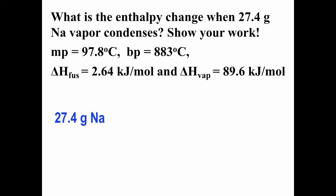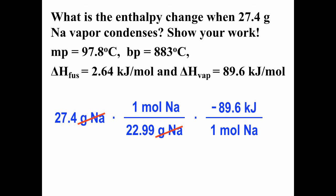It's pretty much the same as the one before. 27.4 grams of Na convert to moles. Then one mole of sodium gives off 89.6 kilojoules of energy or heat when this process takes place. So we put a negative sign on that to indicate that energy is given off. When we do this calculation, we get negative 107 kilojoules. So 107 kilojoules of energy is given off when 27.4 grams of sodium vapor condenses.